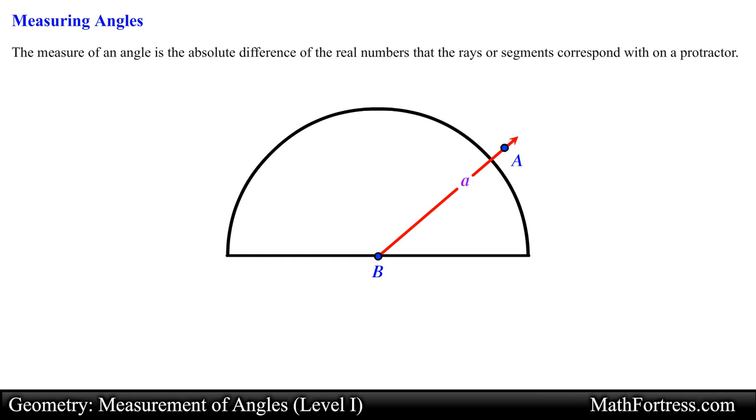then the measurement of angle ABC would be equal to the absolute difference of A minus C or the absolute difference of C minus A. Alright, in our next video we will learn how to classify angles by sizes.